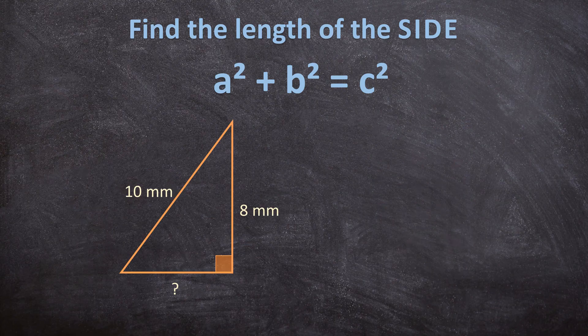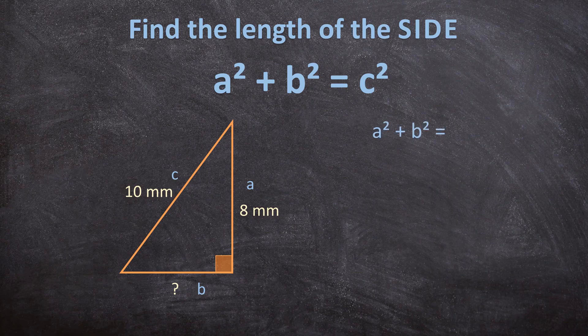Now let's look at another example. Before we start, let's name the sides: A, B, and C, with C always as the hypotenuse. We start with our formula: A² plus B² equals C². But we don't want to calculate C — we want to calculate B. So it's going to be C² minus A², which gives us B².